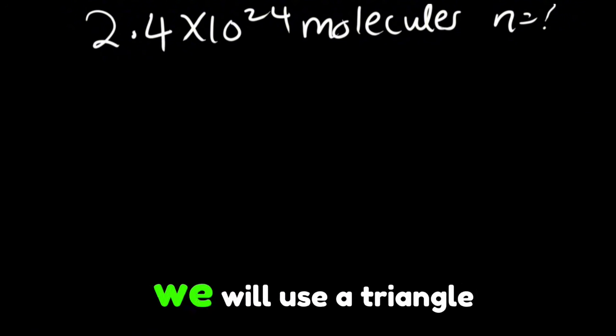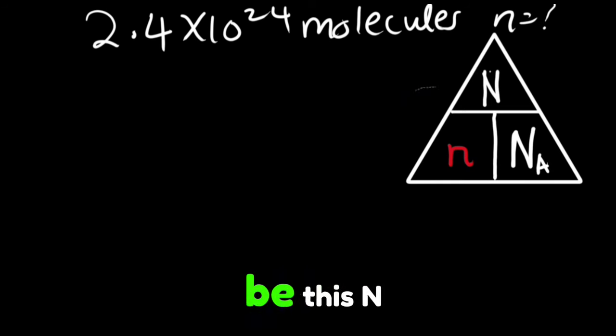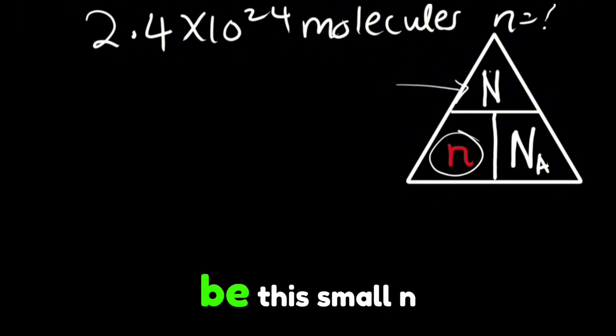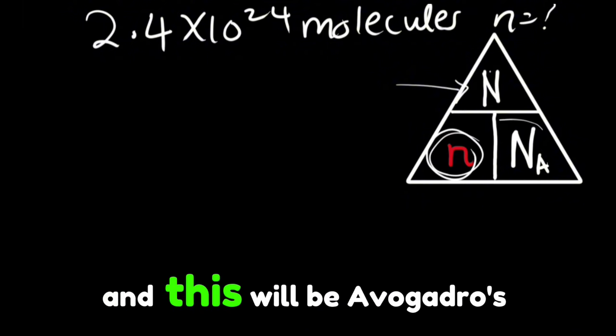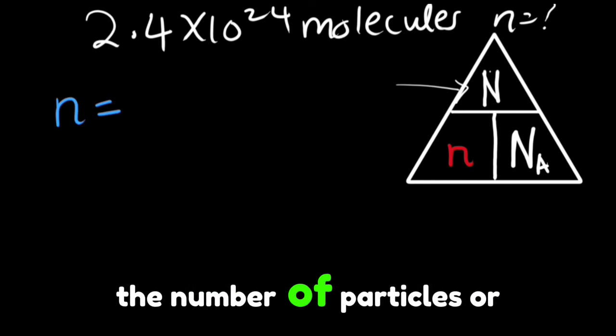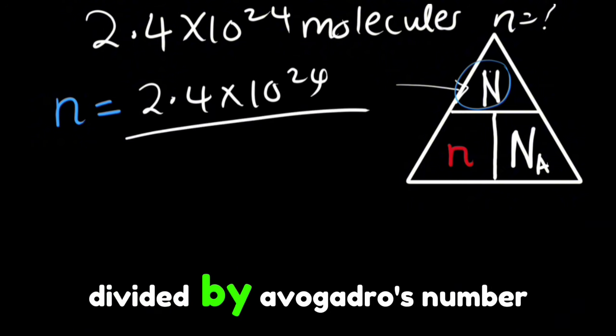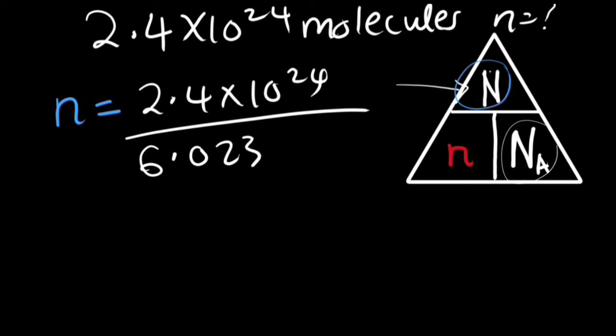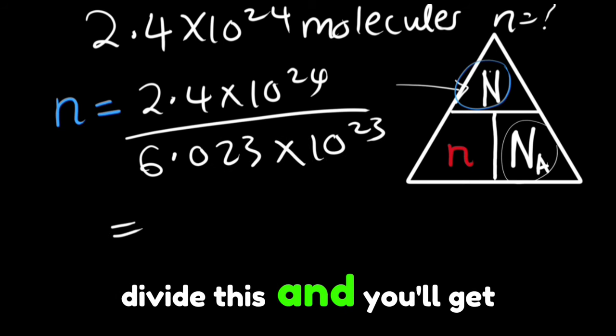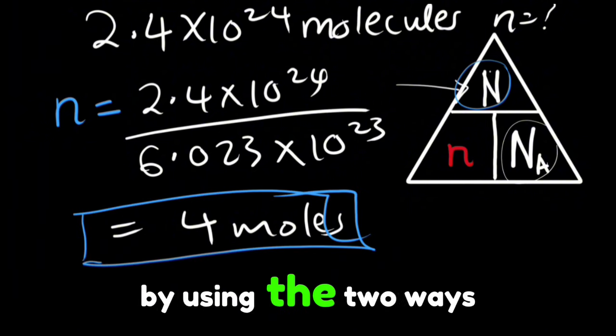Now for the other way we will use a triangle. We'll use this triangle here so the number of molecules will be this N which is the big N and the number of moles will be this small n and this will be Avogadro's number. Let's do it. We'll have here the number of moles is equal to the number of particles or molecules which is 2.4 times 10 power 24 divided by Avogadro's number which is 6.023 times 10 power 23. Divide this and you'll get 4 moles. And that is how you can simply get the number of moles by using the two ways.